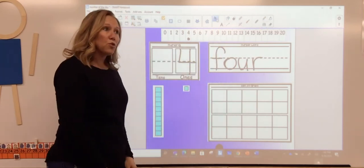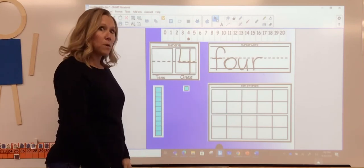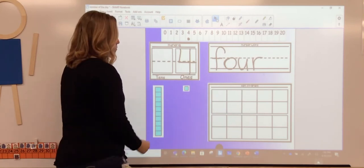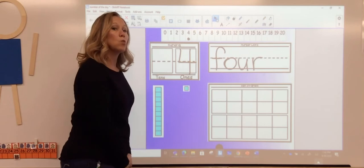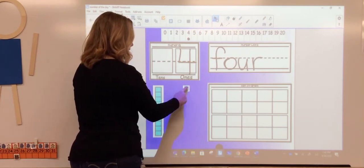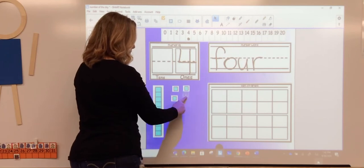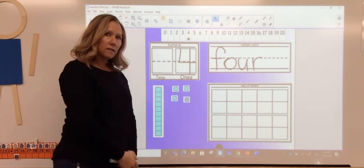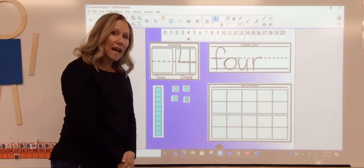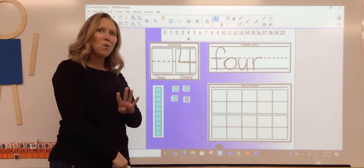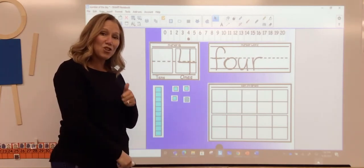Now we are going to count out four squares. And we're going to count that as one. So there's one, two, three, four. How many squares did we count? Four. That's right. Good job friends.